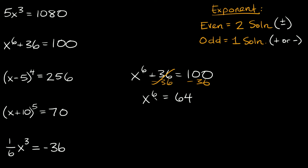Now to get rid of this 6 we need to take the sixth root of both sides. On this side those cancel out and we're left with x is equal to the sixth root of 64, and that's going to be equal to positive or negative...